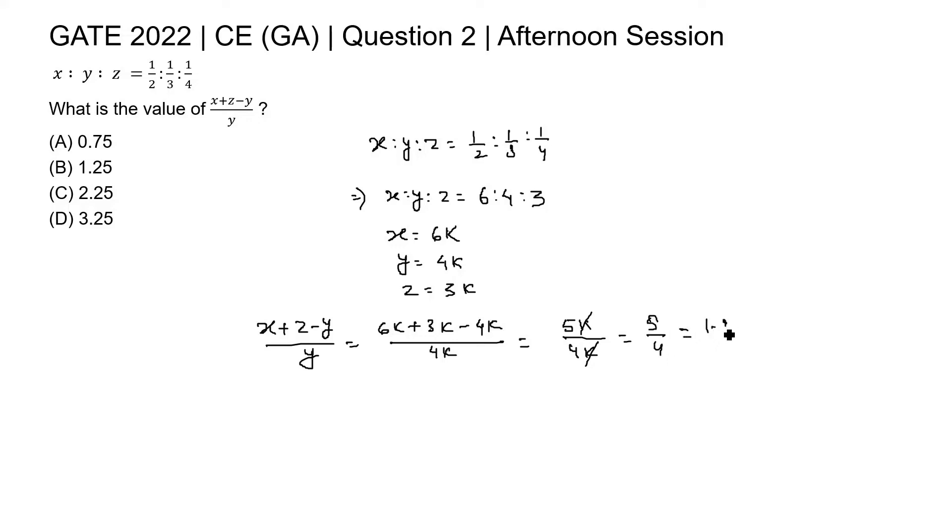5 by 4 is 1.25. Here in the option 1.25 is given in option B. Option B is the correct answer for this question. Thank you.